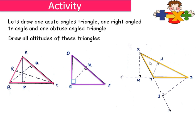Triangle XYZ is an obtuse angle triangle. XM is perpendicular on YZ. We have extended YZ because the altitude falls outside the triangle. Similarly, XY is also extended, and ZJ is perpendicular on XY. So when we take base YZ the height will be XM, and when we take base XY the height will be ZJ.